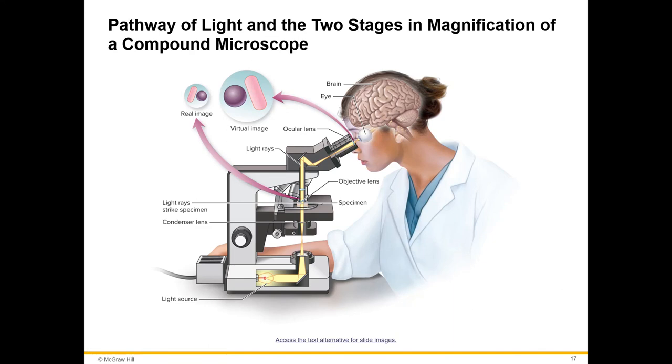In order to visualize a specimen in a light microscope, light originates in the base and travels through the condenser lens where it is focused on the specimen. Then it travels through the specimen into the objective lens where it is magnified, then through the ocular lens where it's magnified again, and then into the eye where it's processed as a visual stimulus.